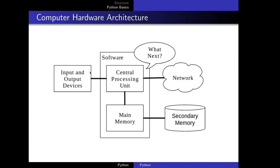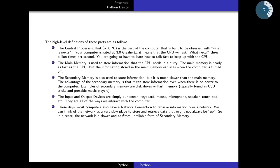To give tasks to the computer, you have to communicate with the CPU. For that, you have to learn a computer language like Python, Java, C, or C++. The process of learning a computer language is similar to learning a natural language like Sinhala, Tamil, French, English, or Japanese.